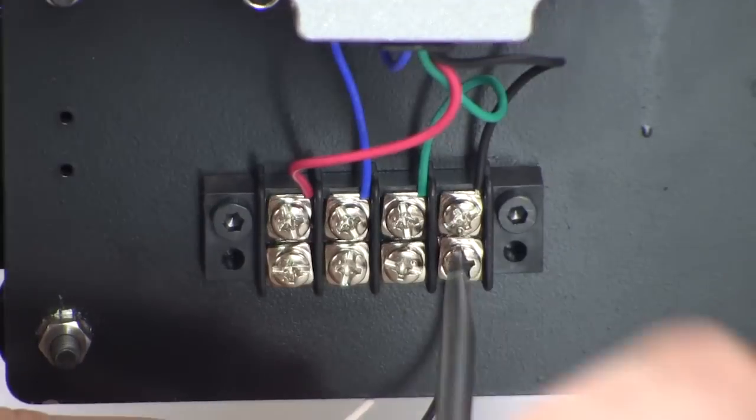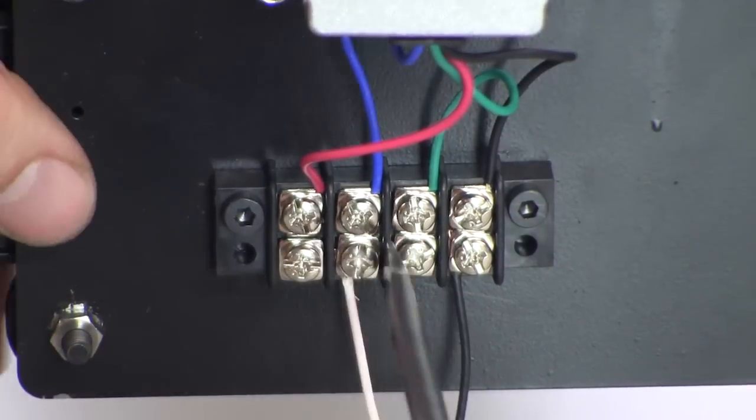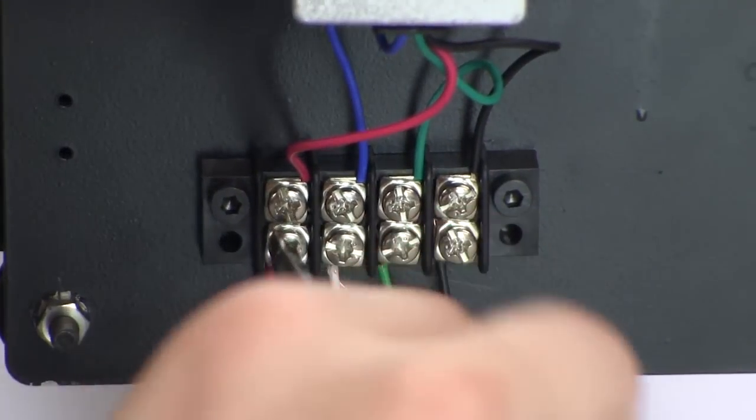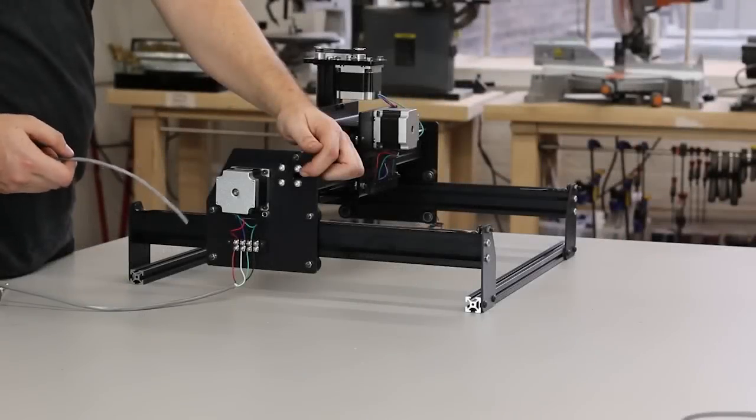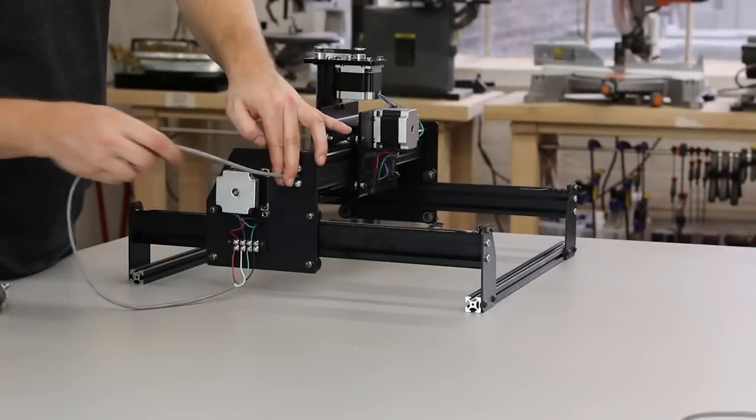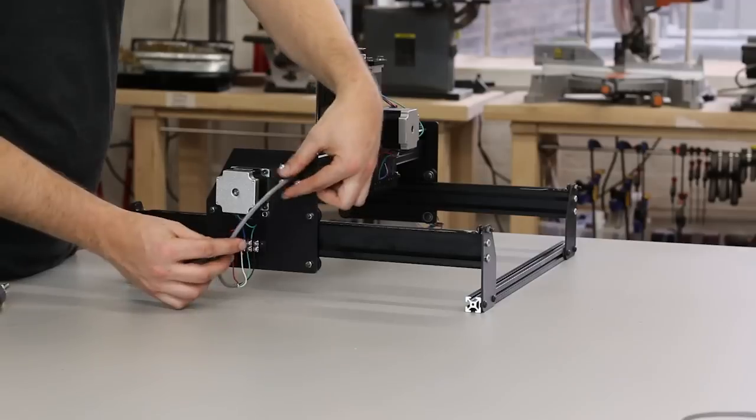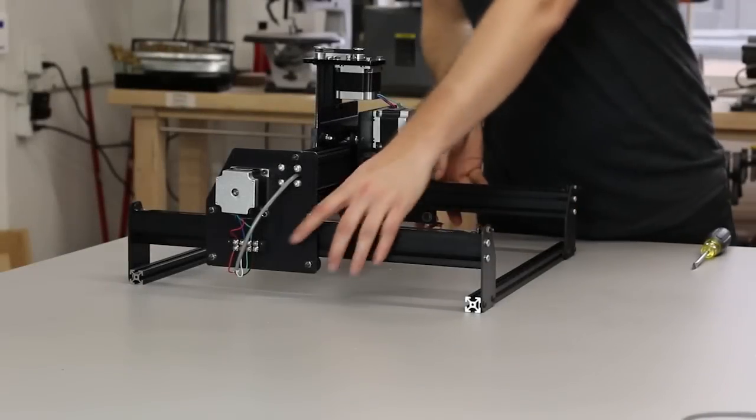On the right Y-motor mount plate, we'll attach this stripped piece of stepper cable. Follow the same wiring pattern that we used for the Y-motor. You'll substitute white for blue. Next, thread this cable through the two pieces of X-axis maker slide. There's a slot in the Y-motor mount plate just for this.